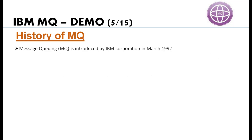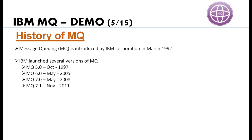Let's look at some history of IBM MQ. MQ stands for Message Queuing and was introduced by IBM Corporation in 1992. They then launched several versions: 5.0 in 1997, then 6.0, 7.0, 7.1, and 7.5. But all versions up to 7.5 are out of support — they are not supported by IBM anymore. Only 8.0 and 9.0 are the latest available versions. Even 8.0 is going to be out of support after April 2020, so after that only 9.0 remains.